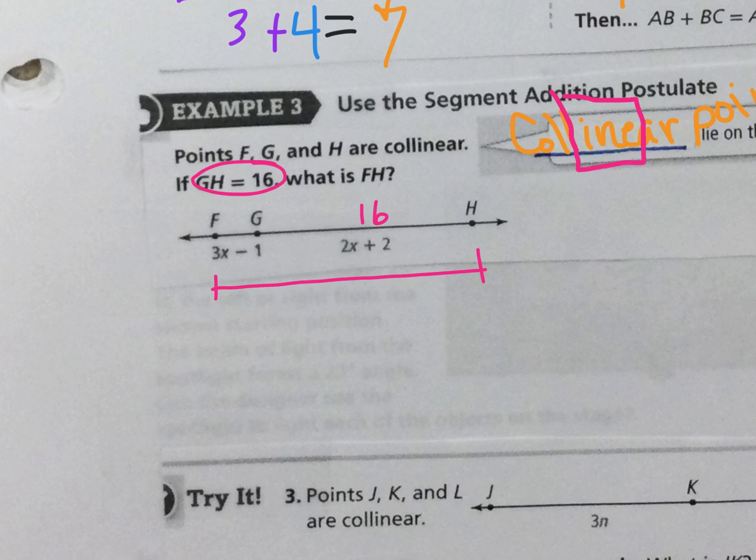So I know that 2X plus 2 needs to equal 16. If I solve for X, I get 7. So now I can find FG.